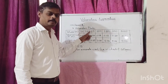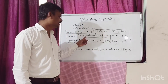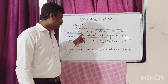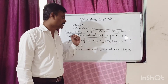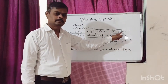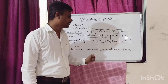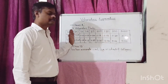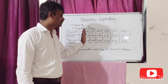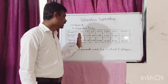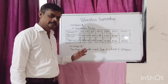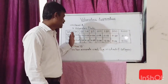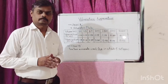Similarly, for 25 ml volumetric flasks, the tolerance limit in ml is plus or minus 0.03 ml. For 1000 ml, the tolerance limit in ml is plus or minus 0.30 ml. From this table, you can see that as the size of volumetric flasks increases, the tolerance limit in ml also increases. However, the tolerance limit with respect to percentage gradually decreases as the size of the volumetric flask increases.